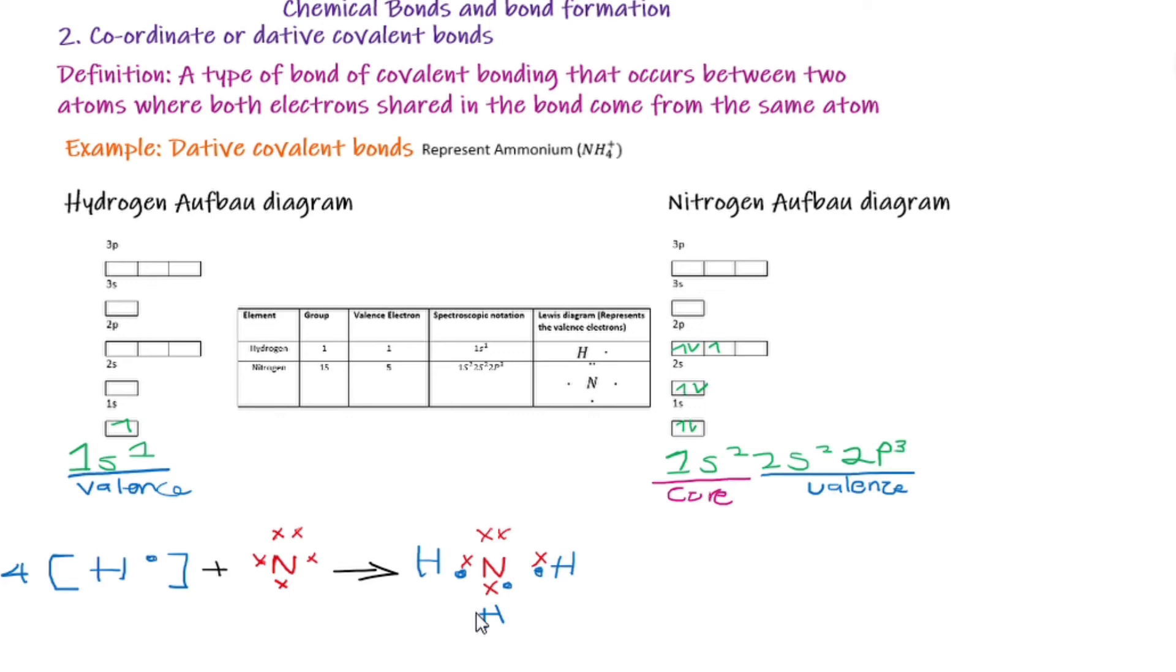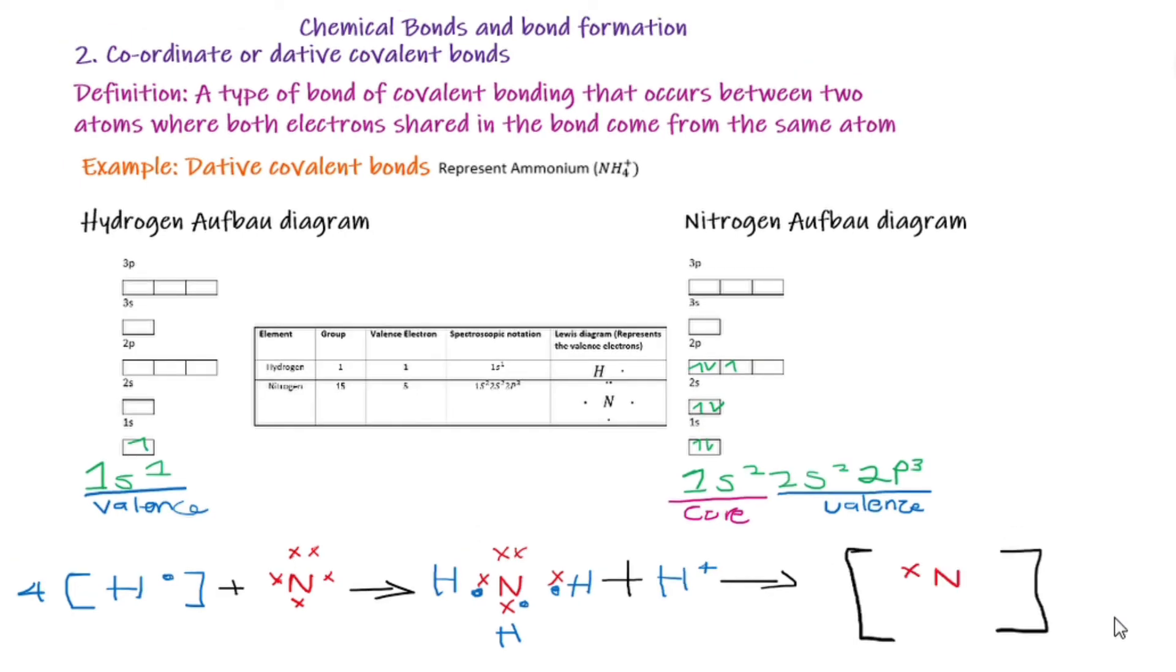This is now where we say coordinate or dative covalent bonding. We can see that we have an extra element that does not fit within our bond and can be represented using a plus sign to show that we have that extra valence electron that did not fit within our bond structure and is represented using positive outside. I hope it makes sense. Thank you so much for watching.